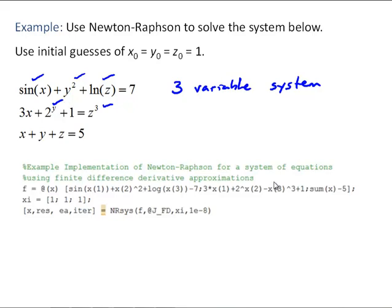Again, here is the main m-file to call Newton-Raphson. And included here is our anonymous function to calculate the function evaluations at each iteration and our initial guesses of 1, 1, 1.